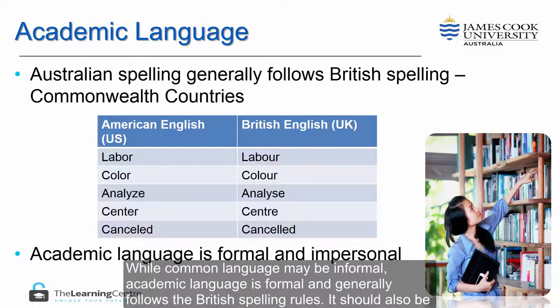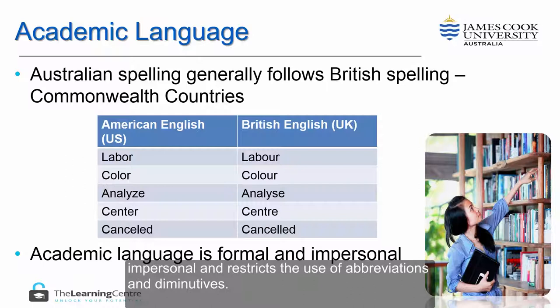While common language may be informal, academic language is formal and generally follows British spelling rules. It should also be impersonal and restricts the use of abbreviations and diminutives.